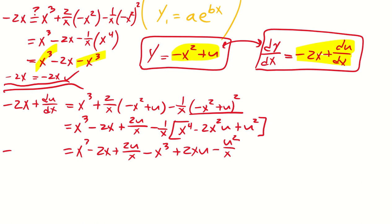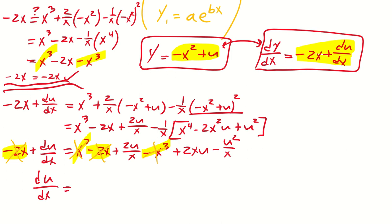The left-hand side remains minus 2x plus du/dx. After simplification, the minus 2x cancels on both sides, and the x cubed terms also cancel. We are left with: du/dx equals 2u over x plus 2xu minus u squared over x.